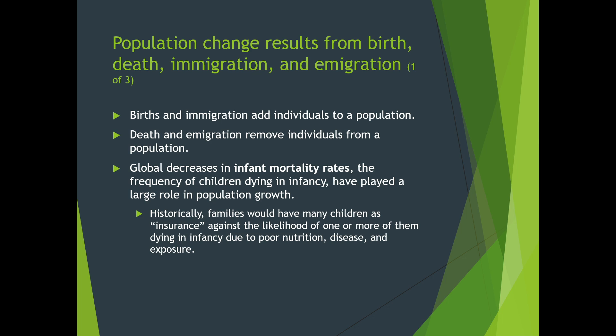A global decrease in infant mortality rates has probably been one of the biggest factors influencing our population growth rate dramatically. The infant mortality rate is the frequency of children dying in infancy — typically up to about three years old. Right now in the US it's probably around 1.7 per thousand, which is pretty good, though it's unfortunately going up.